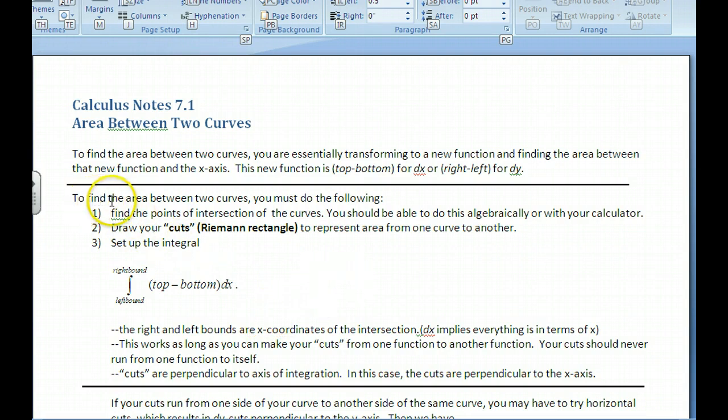A little introduction here. If we want to find the area between two curves, we have to find the points of intersection. You can do it algebraically or with your calculator. Draw cuts of the Riemann rectangle to represent the area from one curve to another, and then set up the integral, left bound to right bound, top minus bottom dx.